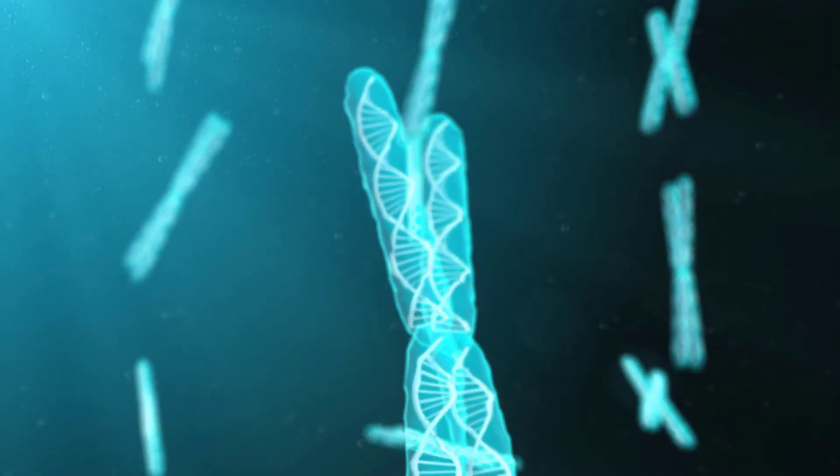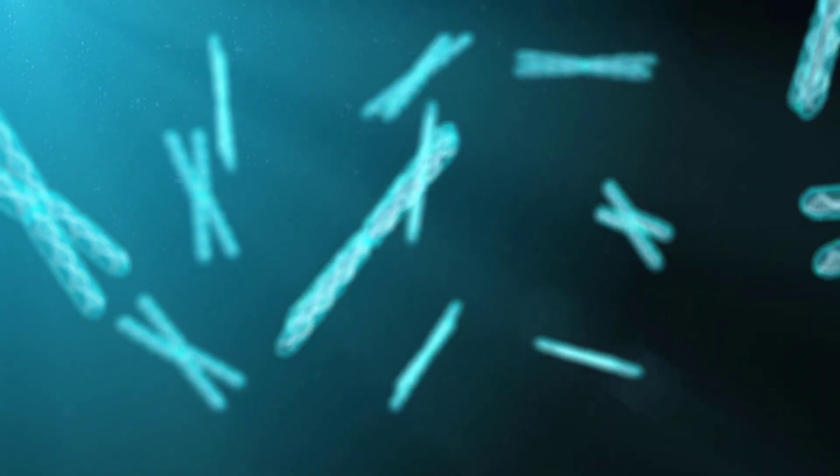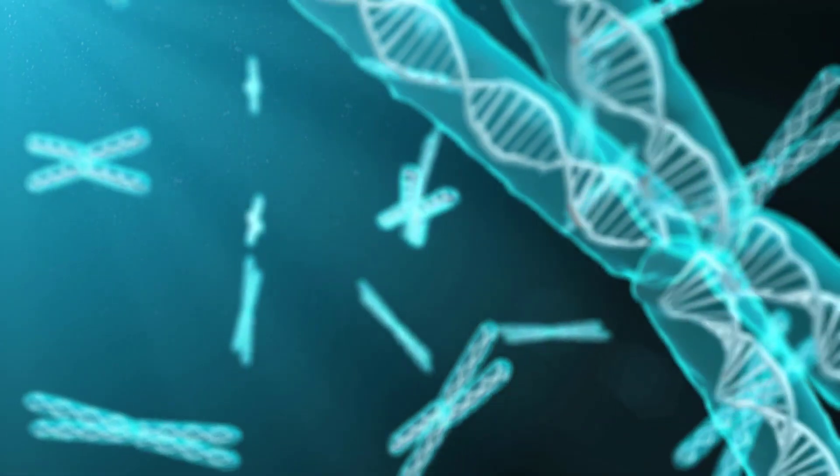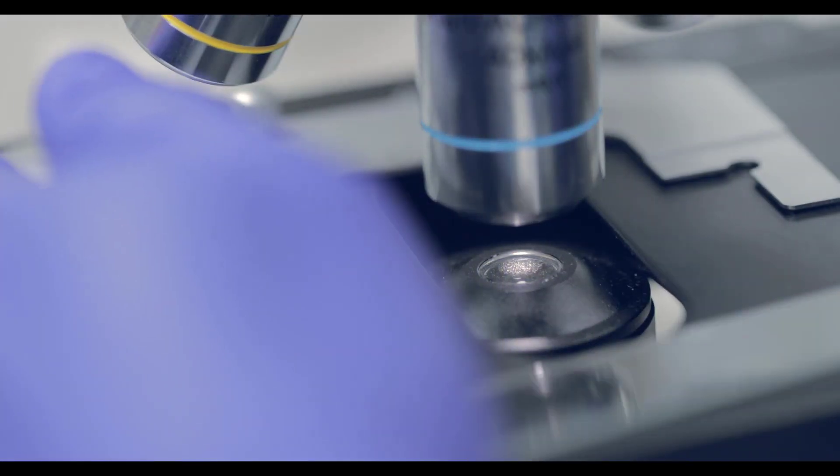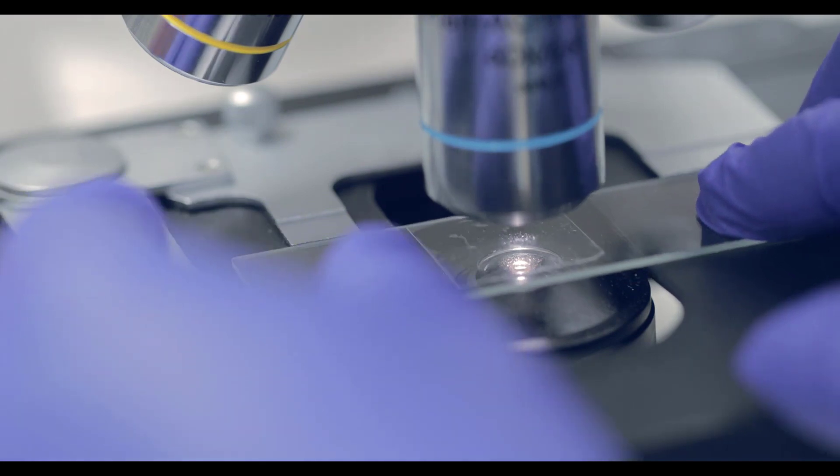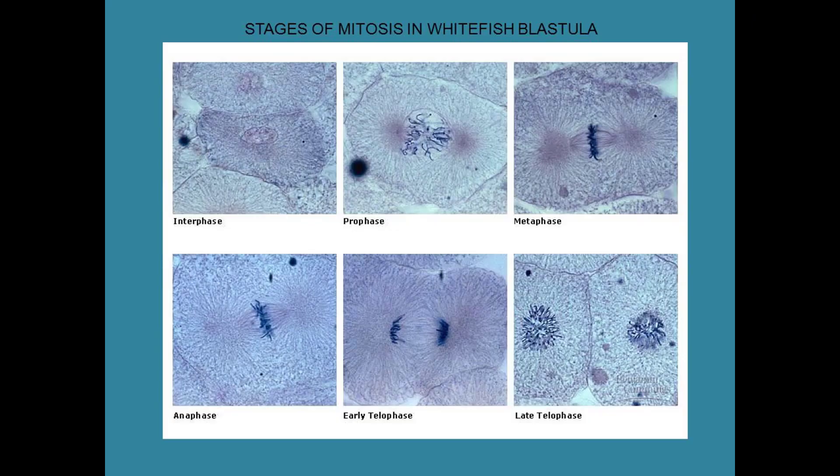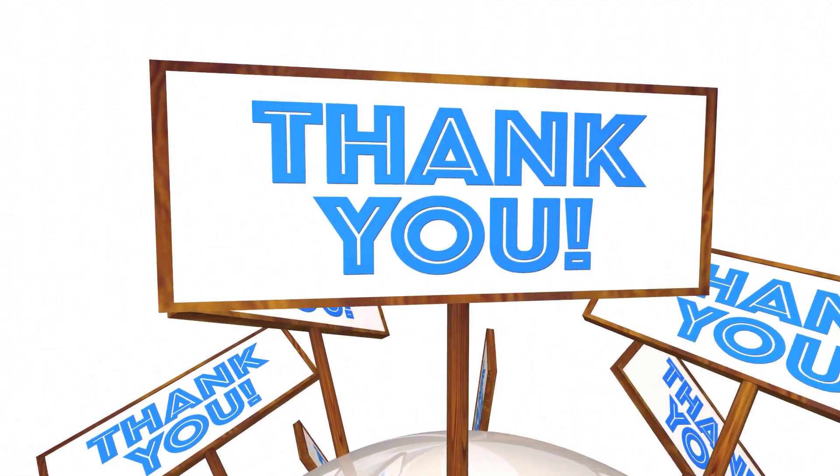Onion root tips have 16 chromosomes, or 8 pairs. The chromosome number of the onions can be expressed as 2n equals 16. Looking at stages of mitosis in the whitefish blastula can be a bit more challenging. Here are some images of the different stages of mitosis in the whitefish. Thank you for watching!